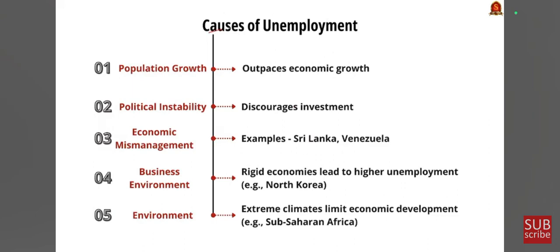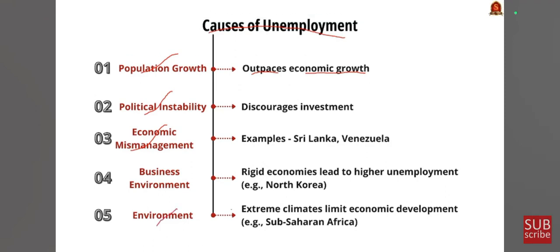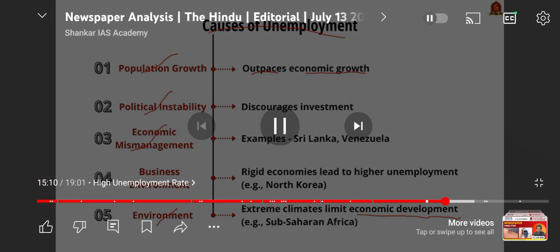Further causes of unemployment: population growth outpacing economic growth creates fewer job opportunities. Political instability is directly linked to discouragement of investment, which undermines job creation. Economic mismanagement — a typical example being Sri Lanka and Venezuela. Business environment — rapid closed economies lead to higher unemployment, for example North Korea. Environmental factors — extreme climatic changes are directly or indirectly linked to economic development and job creation; for example, the Sahel region in Africa turning increasingly arid undermines economic productivity and job creation.